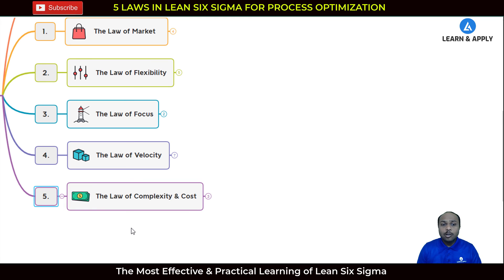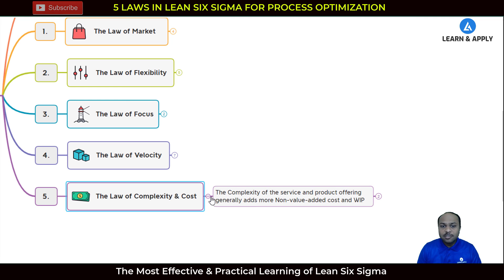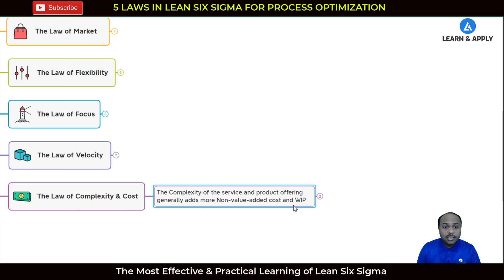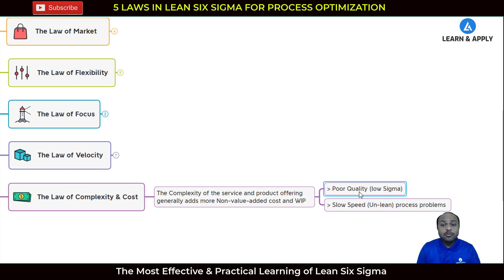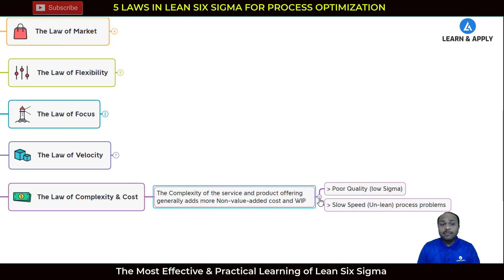The fifth law is the law of complexity and cost. The complexity of service and product offerings generally adds more non-value-added cost and work in process. If we compare these non-value-added costs, the complexity of service and product offerings is greater than both costs due to poor quality and costs due to slow process speed. This indicates that we need to prioritize addressing the complexity of service and product offerings.